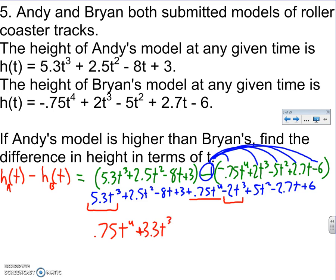Then I do the squared terms. Here's T squared. Here's T squared. 2.5 plus 5. That's 7.5 with T squared. Then here is plain old T. Plain old T. Negative 8 minus 2.7. That's going to be negative 10.7 with the T. And this is the constant term. 3 plus 6 is 9. That is the answer.